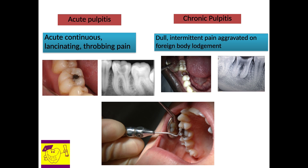On the contrary, during chronic pulpitis, clinically and radiographically there is a wide-open caries lesion with dull intermittent pain.